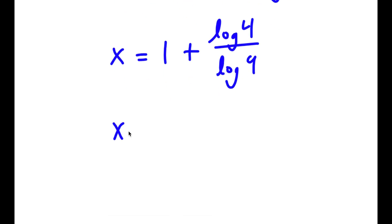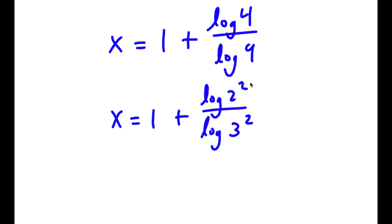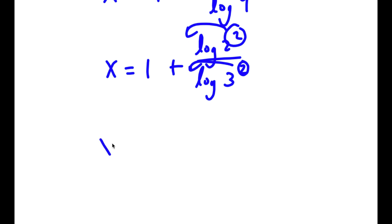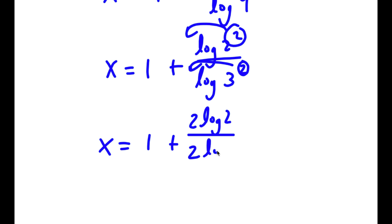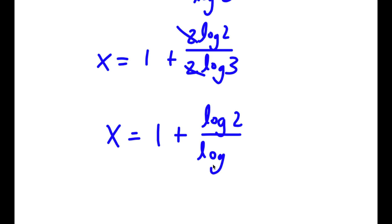And log 4 is the same thing as log of 2 squared, and log 9 is the same thing as log of 3 squared. So now I can move 2 to the front. So now I have x is equal to 1 plus 2 times log 2 over 2 times log 3. Now these two 2s cancel out, so I have x is equal to 1 plus log 2 over log 3.